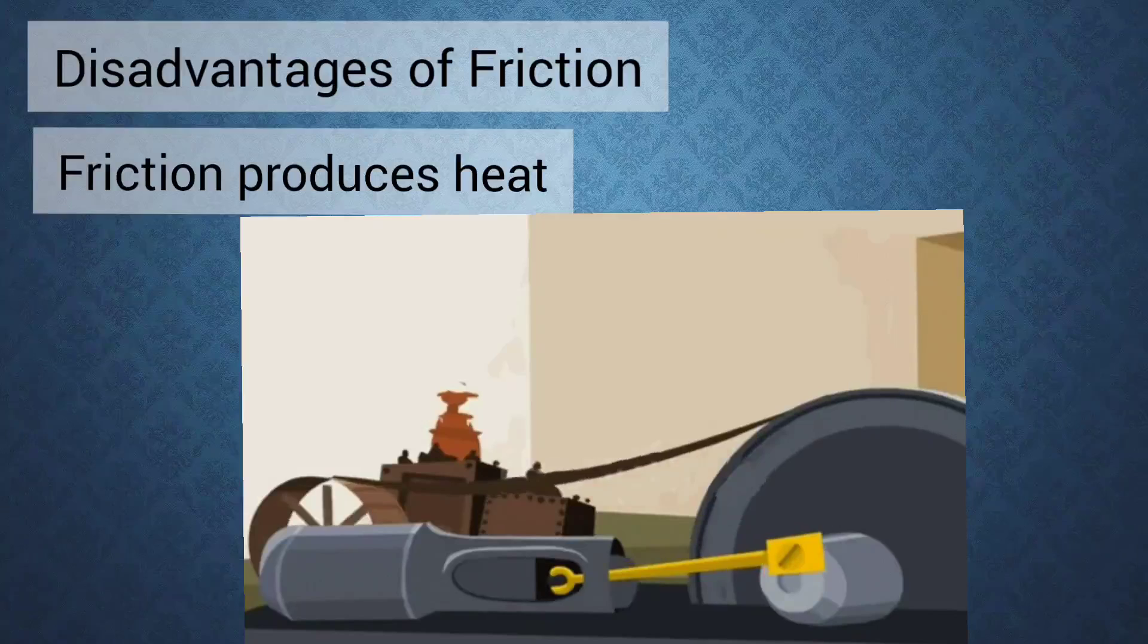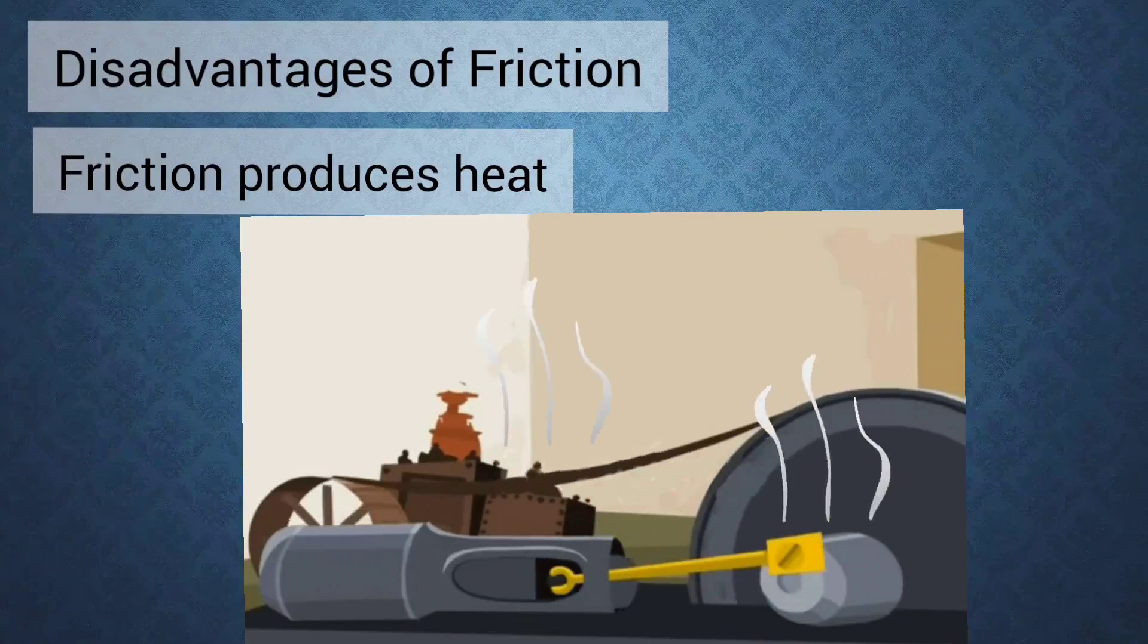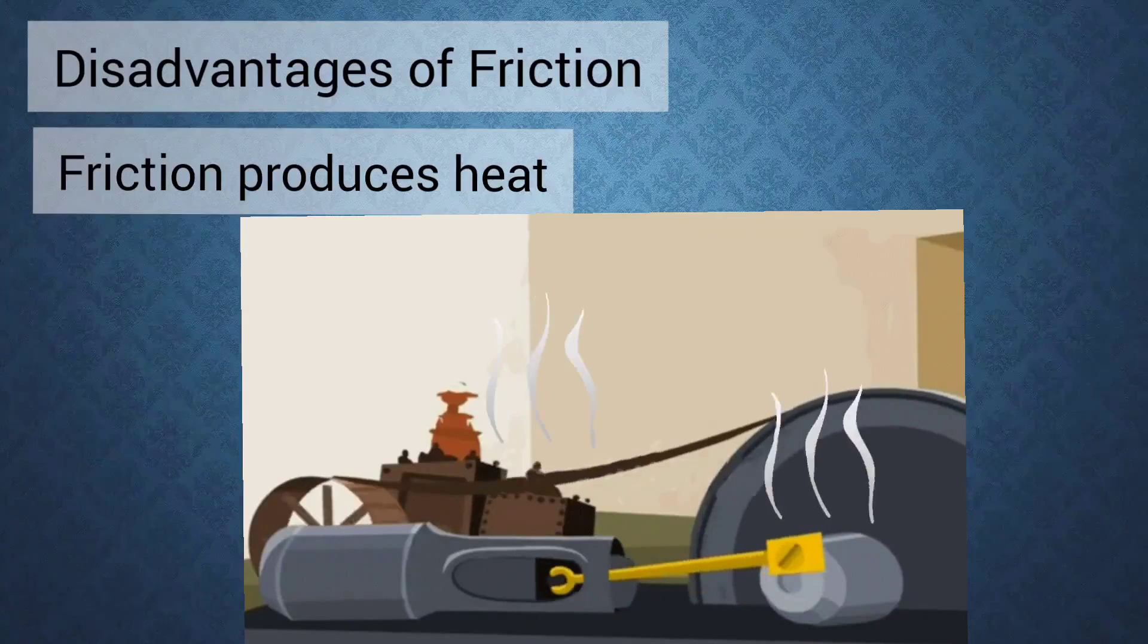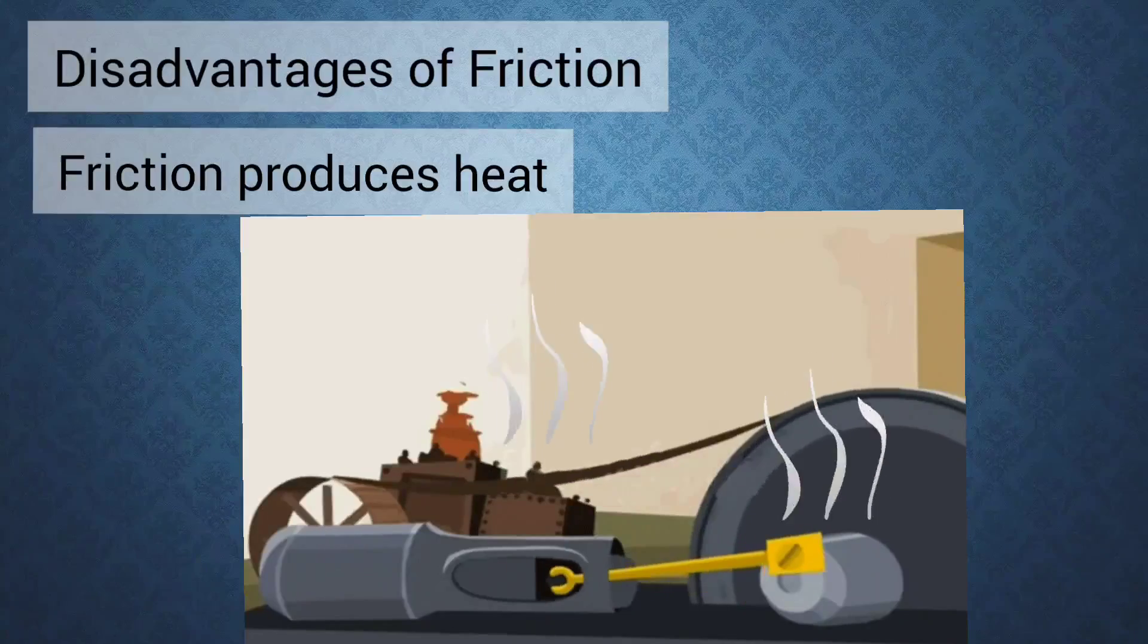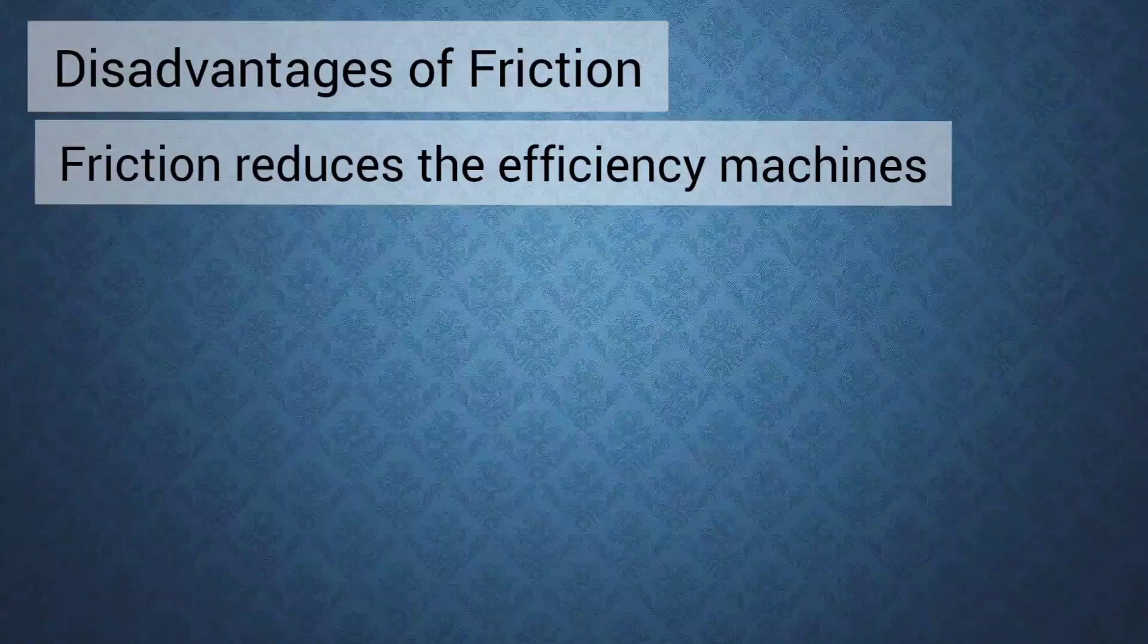When the moving parts of a machine rub together a lot of heat is produced due to friction between them. This heat may damage the machine gradually. Understood?